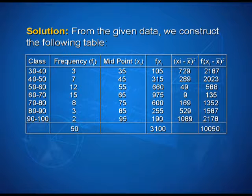Next column shows us xi minus x bar whole square. That can be computed as 729, 289, 49, 9, 169, 529, and 1089.